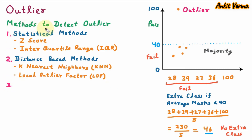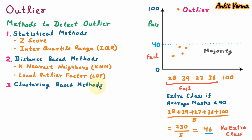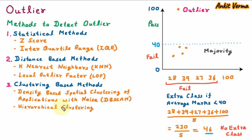The third category of methods to detect outlier is clustering-based methods. The first is density-based spatial clustering of applications with noise, also called DBSCAN — it clusters the data points based on their density and identifies the outlier which are not belonging to any cluster. Next is hierarchical clustering — it creates a hierarchy of clusters and then identifies the outlier which is belonging to the smallest cluster.